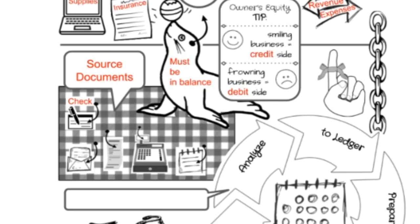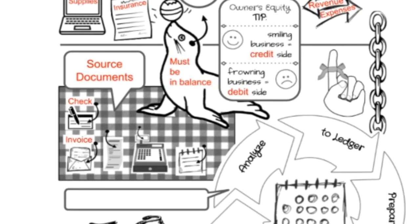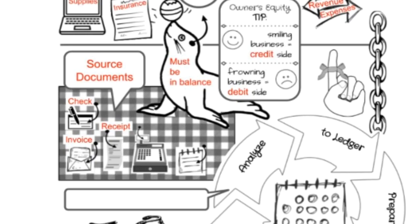Businesses, anytime they write a check, they keep a check stub as the source document. Next up, we have an invoice. We have a receipt.